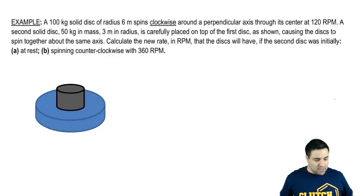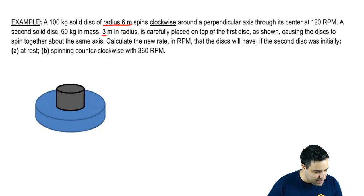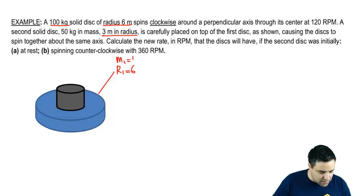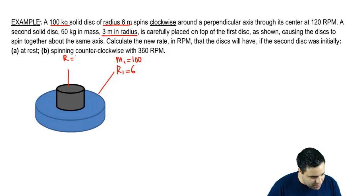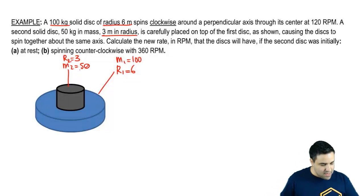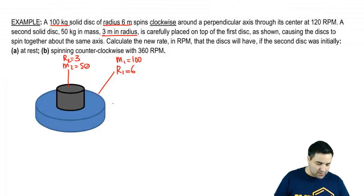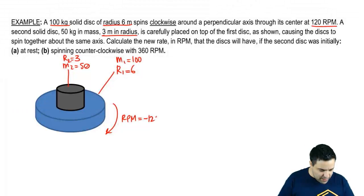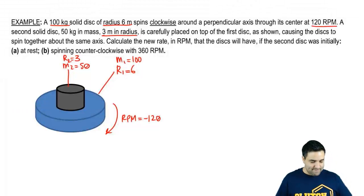Here I have two disks. The blue disk has radius r₁ = 6 meters and mass m₁ = 100 kg. The gray disk has radius r₂ = 3 meters and mass m₂ = 50 kg. The 100 kg outer disk spins clockwise — clockwise is negative — at 120 RPM, so I'll call this negative 120 RPM. It spins around a perpendicular axis to its center, meaning the imaginary axis runs 90 degrees to the face of the disk — standard rotation for a disk.